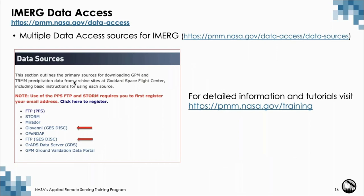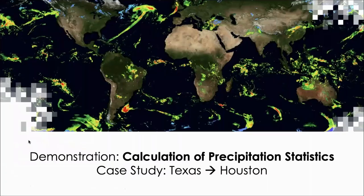For iMerge data access, there is a link with step-by-step tutorials on how to download iMerge data. There are multiple ways to access or download it: direct FTP, special websites for Level 2 and Level 3 visualization and download. We are going to use two features: Giovanni, a widely-used website to access, analyze, and visualize data, and also direct FTP from the data information system. Today we focus on Giovanni; next week will use the FTP approach to download data.